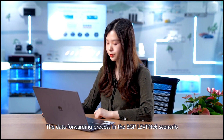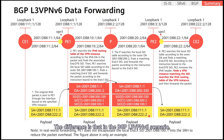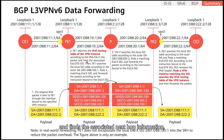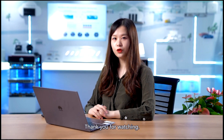The data forwarding process in the BGP L3 VPNv6 scenario is similar to that in the BGP L3 VPNv4 scenario. The difference is that in the BGP L3 VPNv6 scenario, C1 sends IPv6 packets to P1. After receiving such a packet, P1 searches the IPv6 routing table of the VPN instance and finds the associated next-hop information, which is an End.DT6 SID. The operations performed by P2 are similar to those performed by P1. That's all for this course. Thank you for watching.